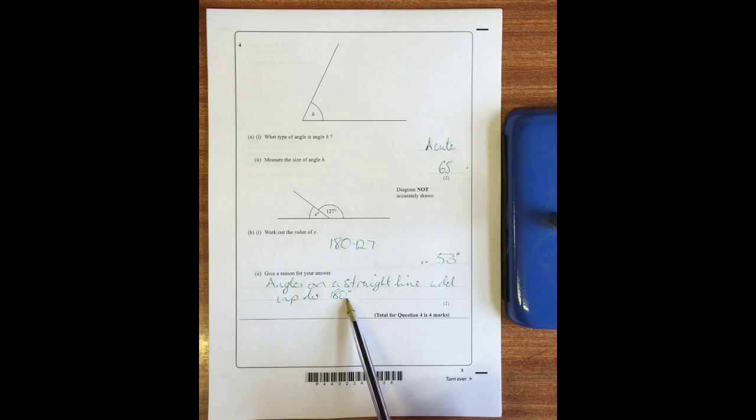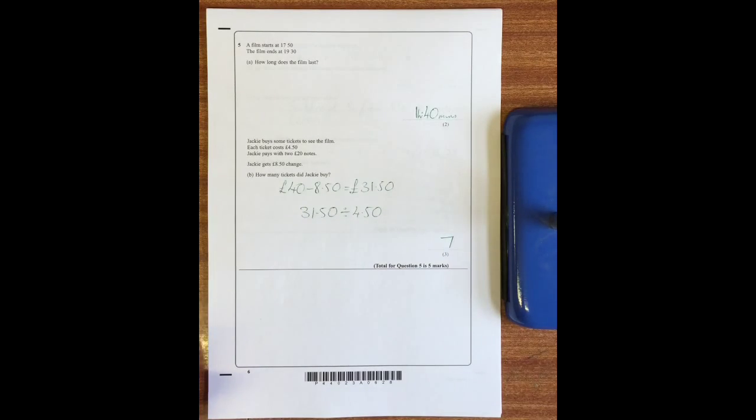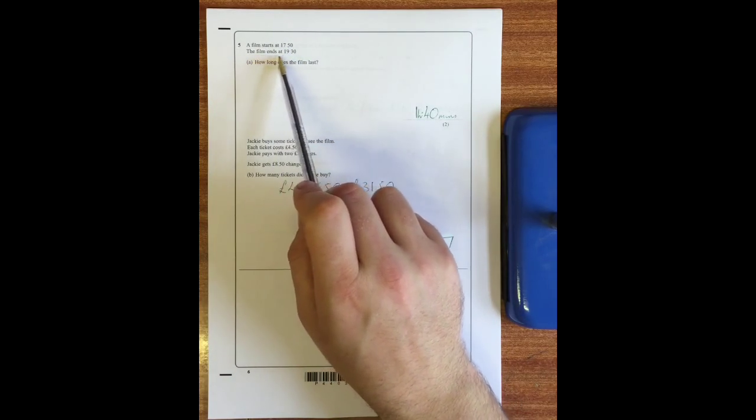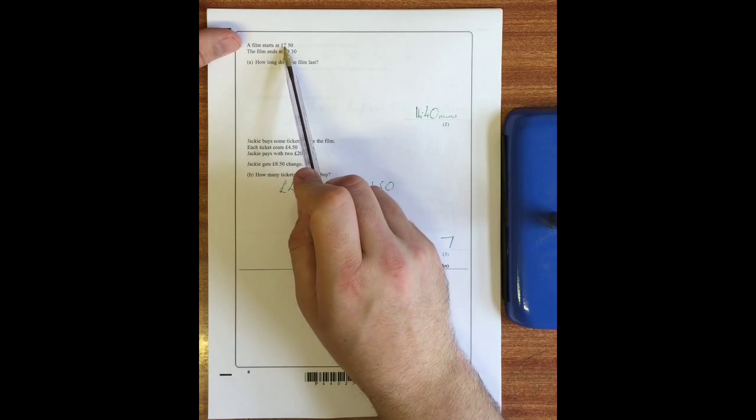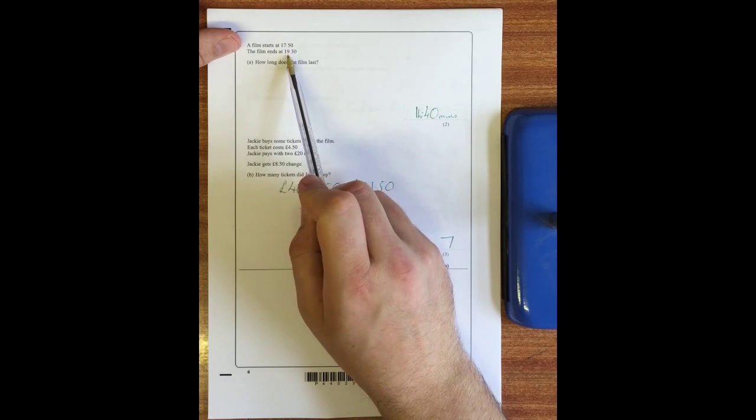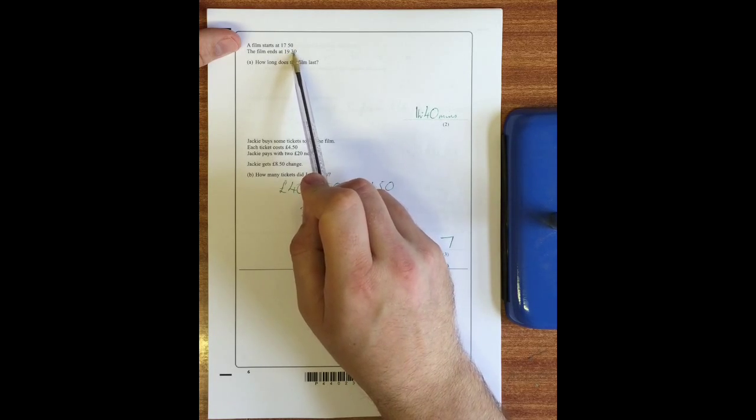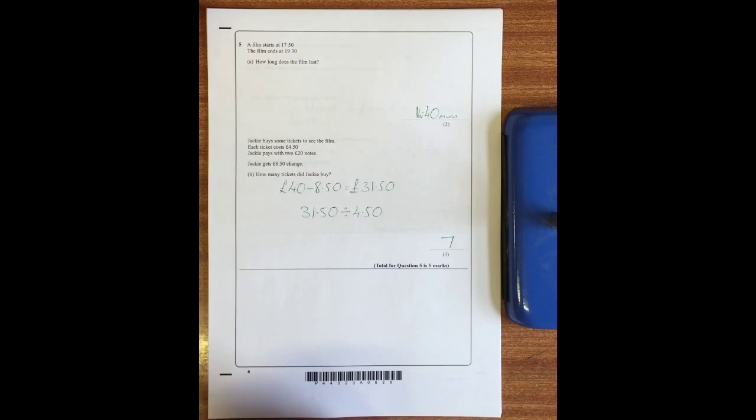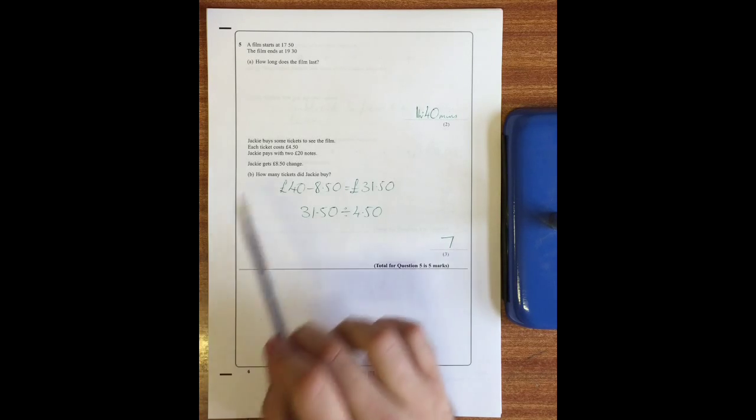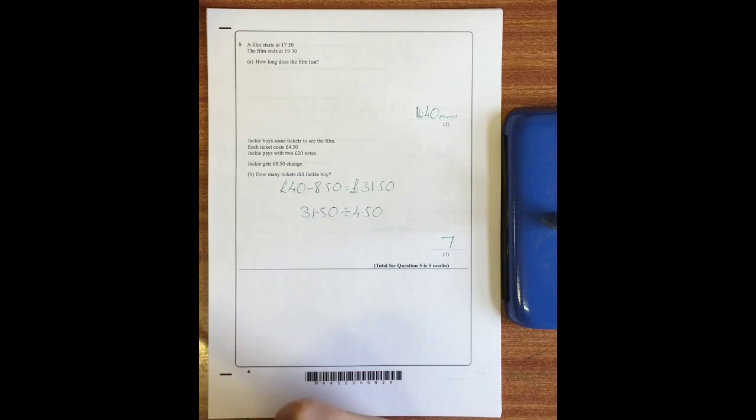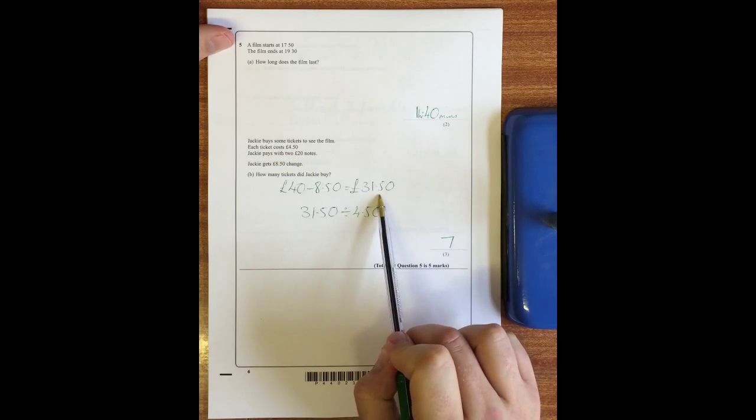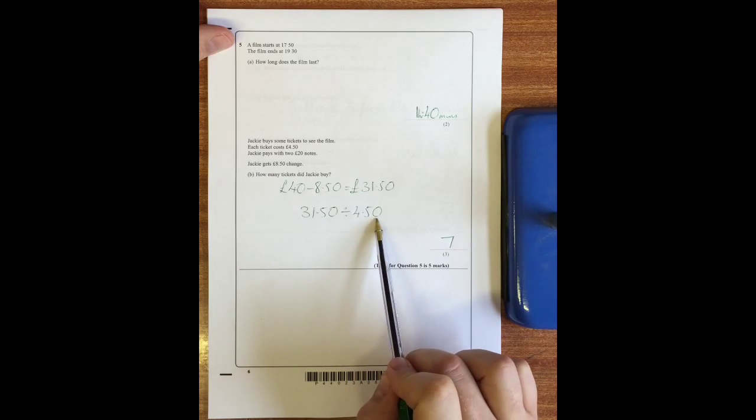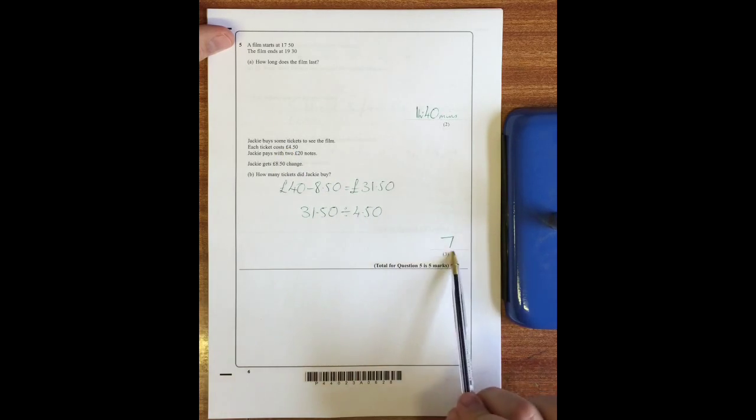Question five: a film starts at 5:50 and ends at 7:30. How long does it last? Well that is one hour and 40 minutes. To do that you can go 10 minutes up to six o'clock, another hour till seven o'clock - so that's an hour and ten - and then add the 30 minutes on, an hour and 40. Jackie buys some tickets to see the film. Each ticket costs four pounds fifty. She pays with two twenty pound notes and gets eight pound fifty change. How many tickets did she buy? Well if we take the change off 40 pounds - 40 pounds is the two twenty pound notes - then she must have spent 31 pound fifty. And if we divide that by four pound fifty, the cost for each ticket, using a calculator that will give us seven.